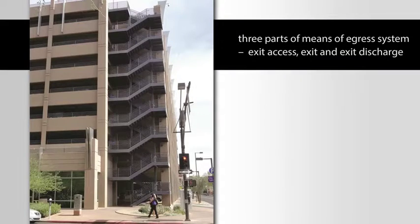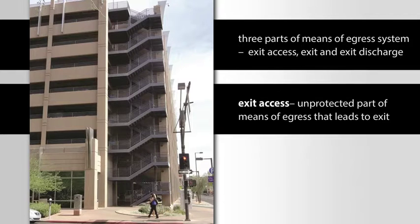The three parts of the means of egress system are the exit access, exit, and exit discharge. The exit access is the unprotected part of the means of egress that leads to an exit.